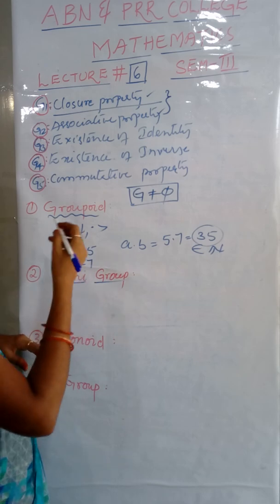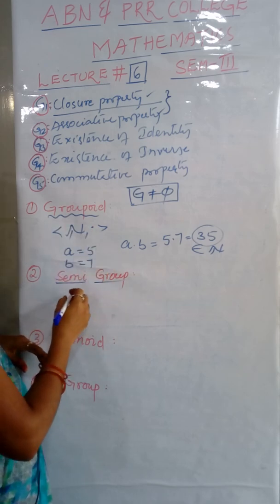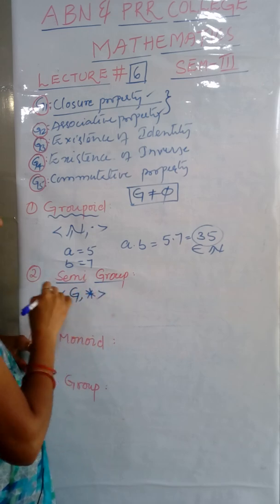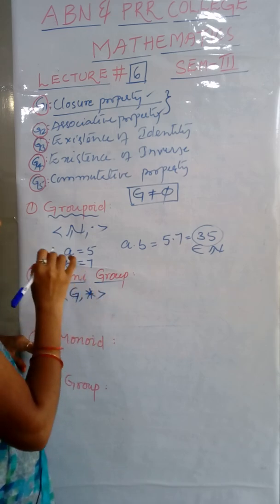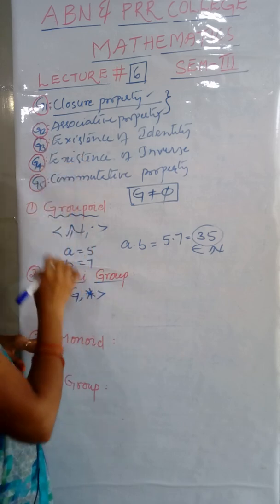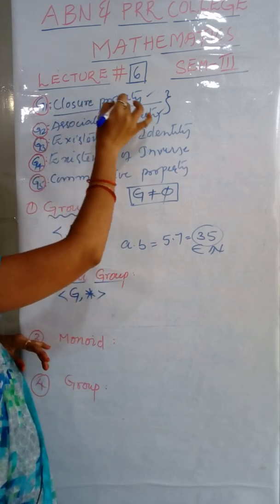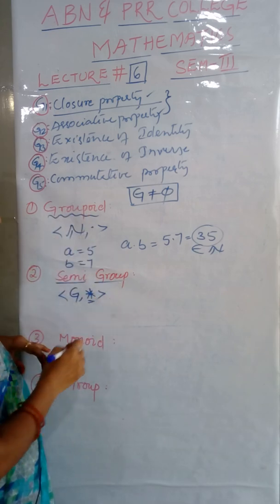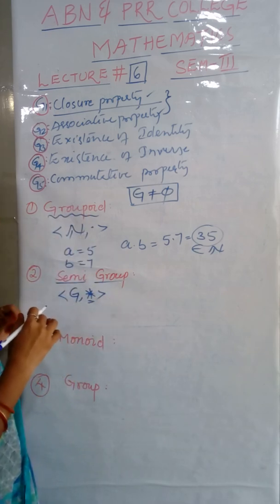If you consider composition is star, you want to say that G, star is a semigroup if this set satisfies two properties: closure property and associative property with that composition. Then we say that it is a semigroup.